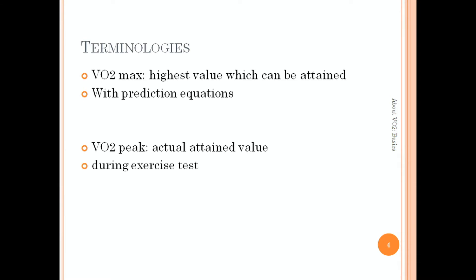Now we'll see some terminologies. VO2 max and VO2 peak are two terminologies associated with VO2. VO2 max is the highest value which can be attained and it can be calculated with the help of prediction equations, whereas VO2 peak is the actual attained value by the patient during the exercise test. Though these terminologies are interchangeably used, we need to understand the exact difference between them.